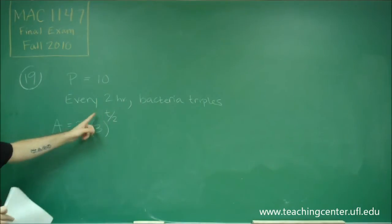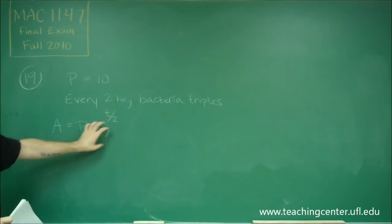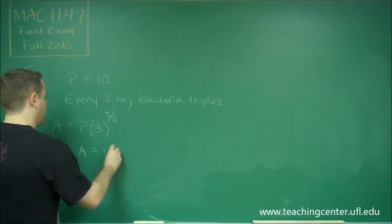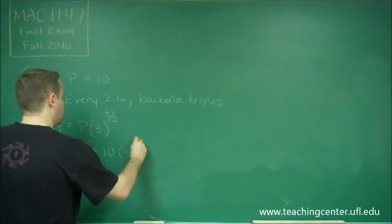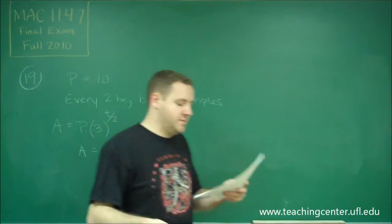until t is two. So once t becomes two, now you have two over two, which is one, so you do three times your initial. So you have to have three to the t divided by two power. And we know that our p is ten. So our actual number for the amount of bacteria is ten times three to the t over two for any given t.